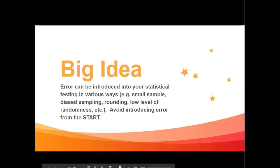Today's big idea is that error can be introduced into your statistical testing in a variety of ways — a small sample, biased sampling, rounding, and a low level of randomness. You want to avoid introducing error from the start. Don't forget to check your emails, check Blackboard, do your homework, and subscribe to this channel — hit that notification bell so you know when there are new videos. This is your teacher Torah saying stay safe, and I will be waiting to give you a virtual elbow bump in the next video. Ciao!